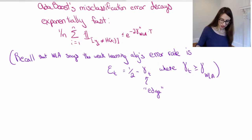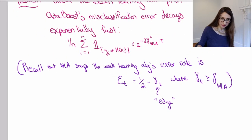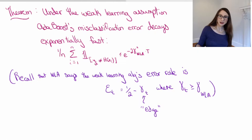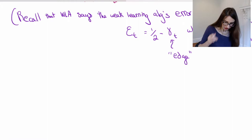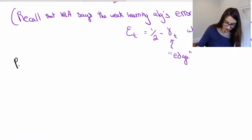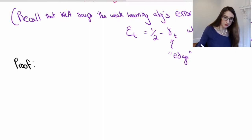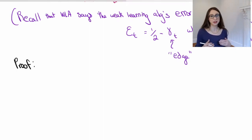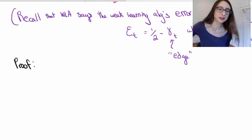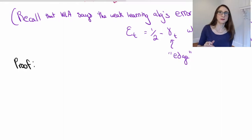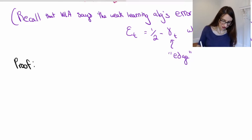So let's actually go and try to prove this. It seems like too good to be true that the error decays exponentially fast, but that's the weak learning assumption for you. There are two main steps in this proof: the first is to write down the recursion between the exponential loss at time t+1 and time t, and then it's to unravel that recursion.